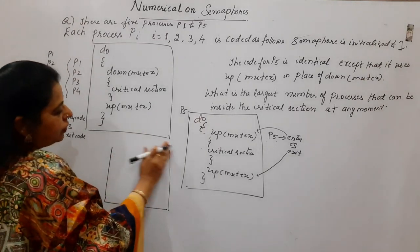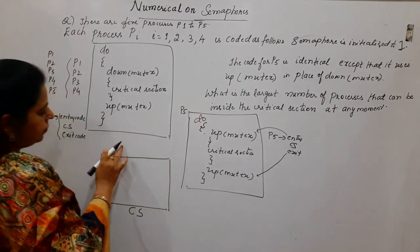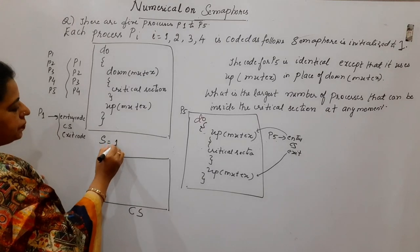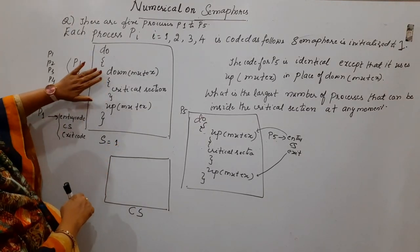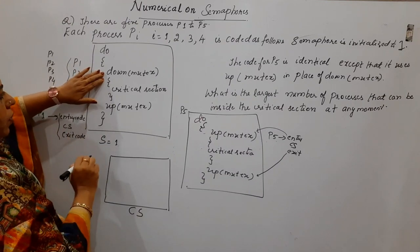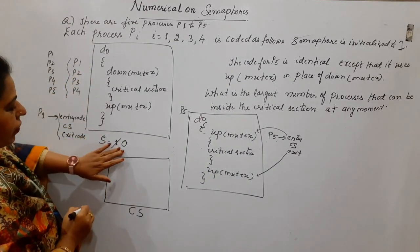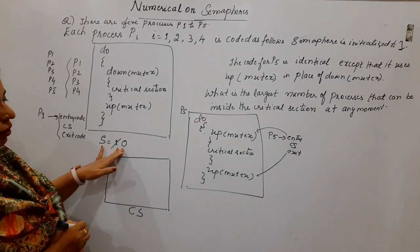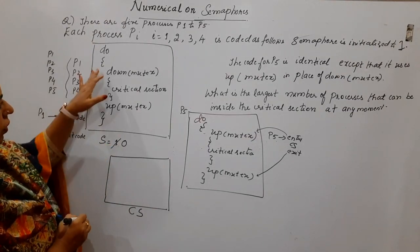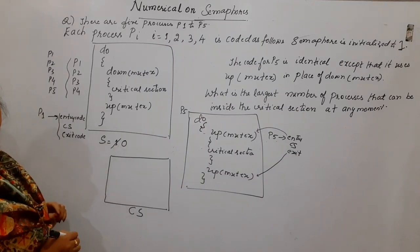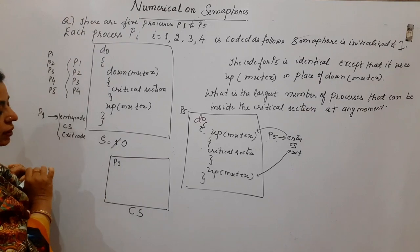If the semaphore value is initialized to 1, S = 1. First, P1 will perform the down operation because its entry code is to do the down operation. When P1 tries to do the down operation, the semaphore value becomes 0. So the semaphore value has become 0 now because P1 has carried out this. Once P1 has done this, it can enter into the critical section. P1 has come in.